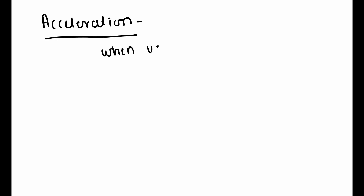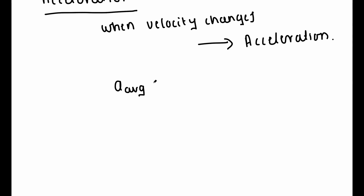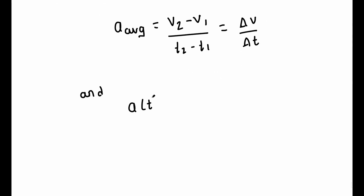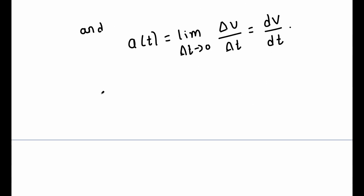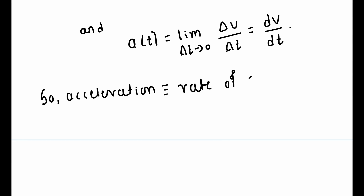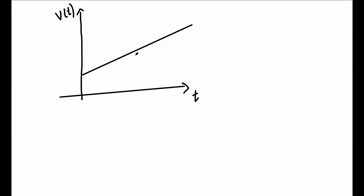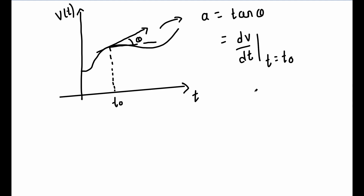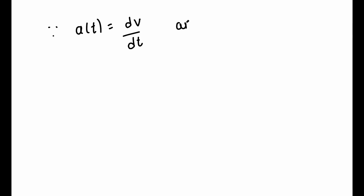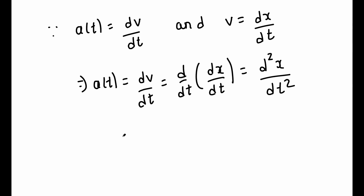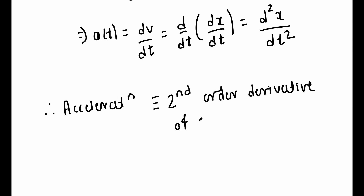When the velocity of a particle changes, it is said to undergo acceleration. Just like average velocity and instantaneous velocity, we have average acceleration and instantaneous acceleration. A_average = delta v / delta t, and instantaneous acceleration is given by A = dv/dt. Acceleration of a particle at any instant is the rate at which its velocity is changing at that instant. In a graph of velocity versus time, acceleration at time t0 is the slope of the tangent to the curve at t = t0. Since A = dv/dt and v = dx/dt, we can combine them and write A = d²x/dt², so acceleration at any instant is the second derivative of position with respect to time.